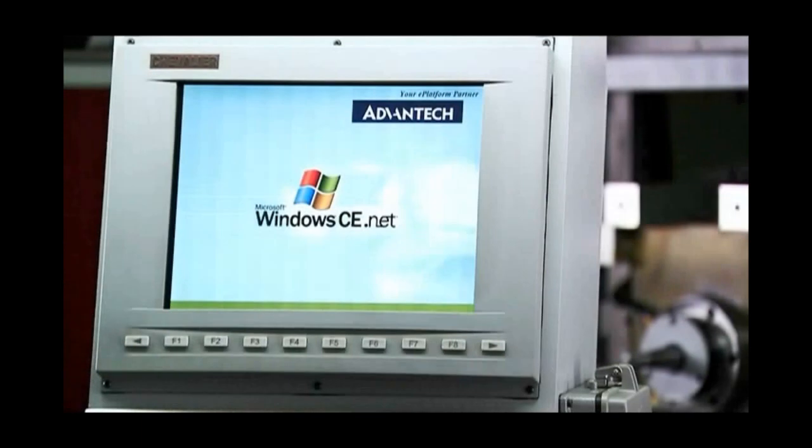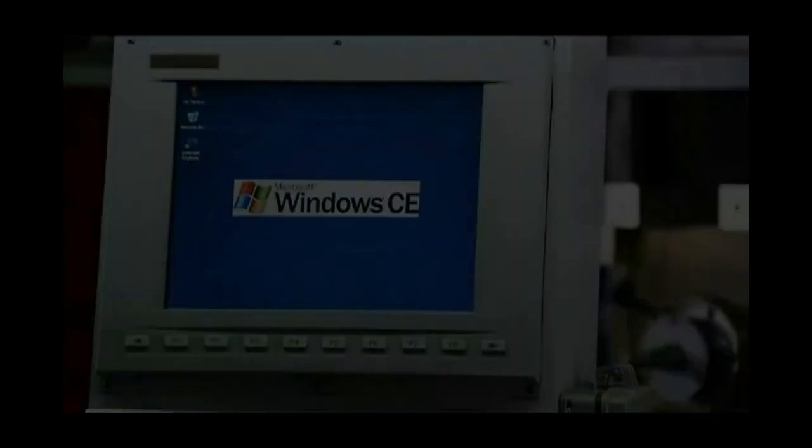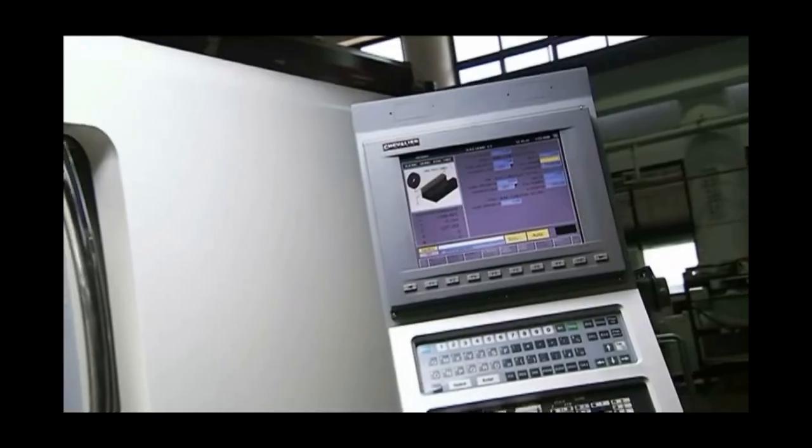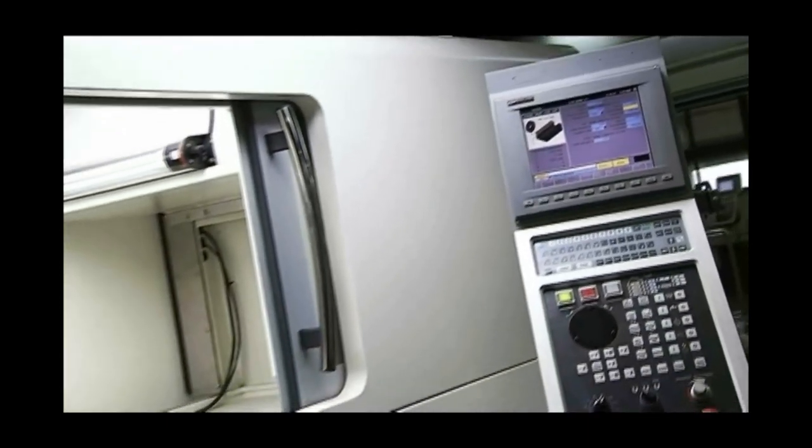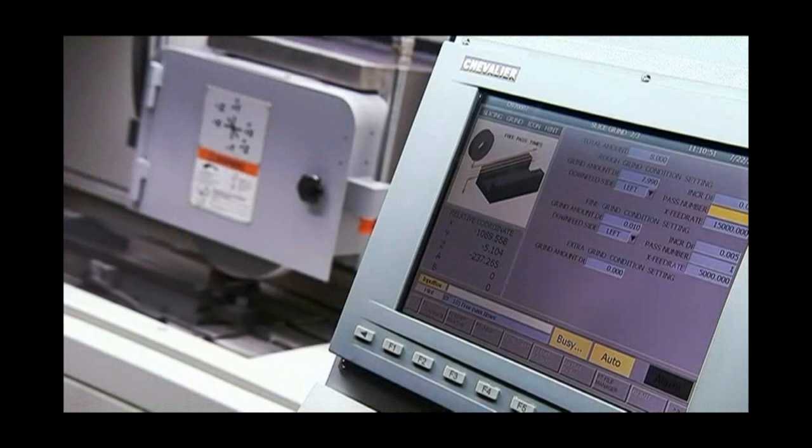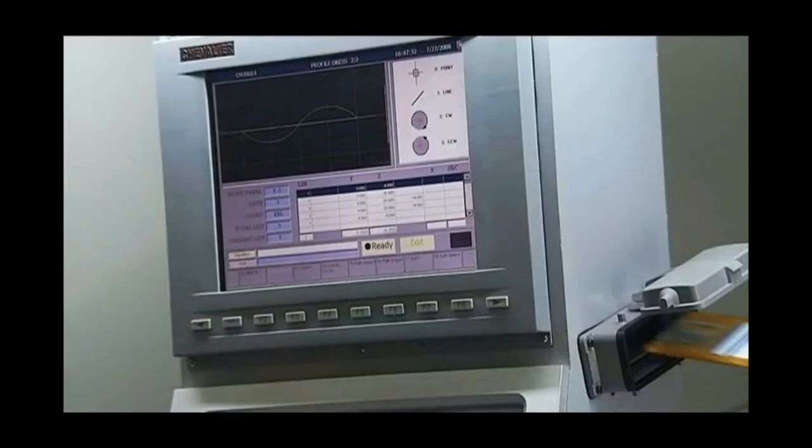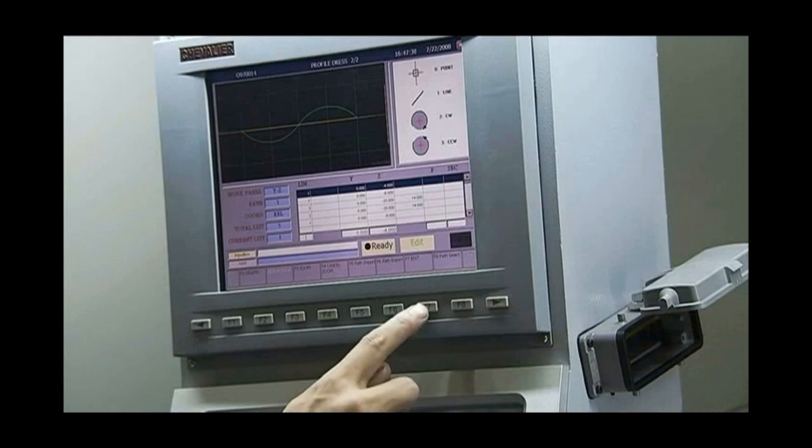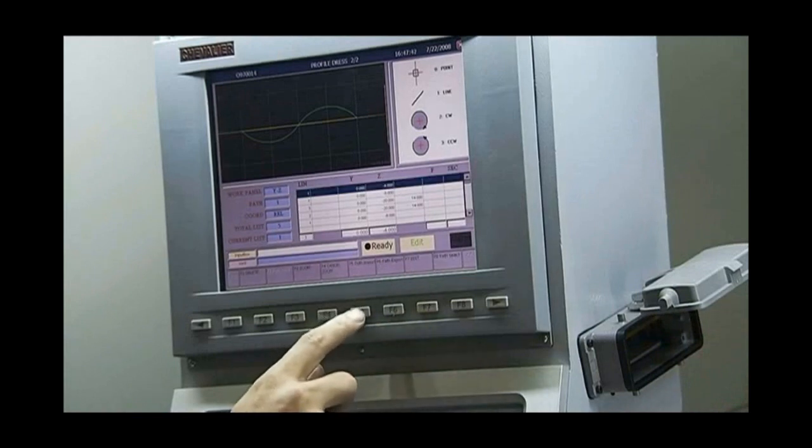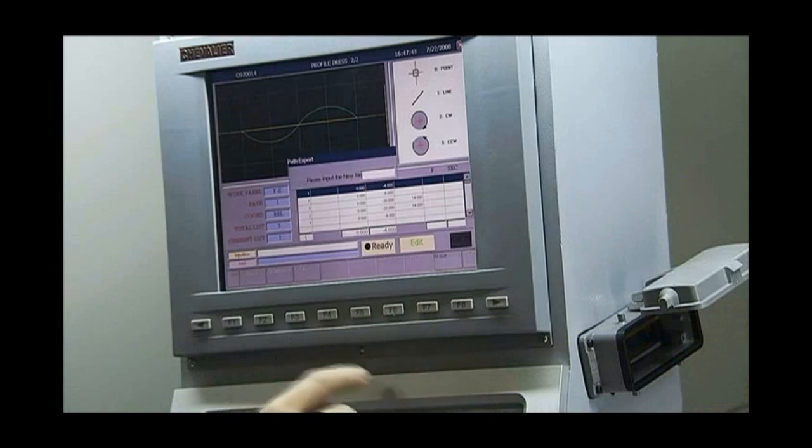The Smart series controller runs on a Windows platform and Chevalier's own design conversational interface which provides an amazing range of the most advanced functions you could wish for in a grinder. Getting started with the Smart is easy and the system allows easy porting of Fanuc M and G-code programs or even CAD files through the USB or floppy port and the unique conversational interface.